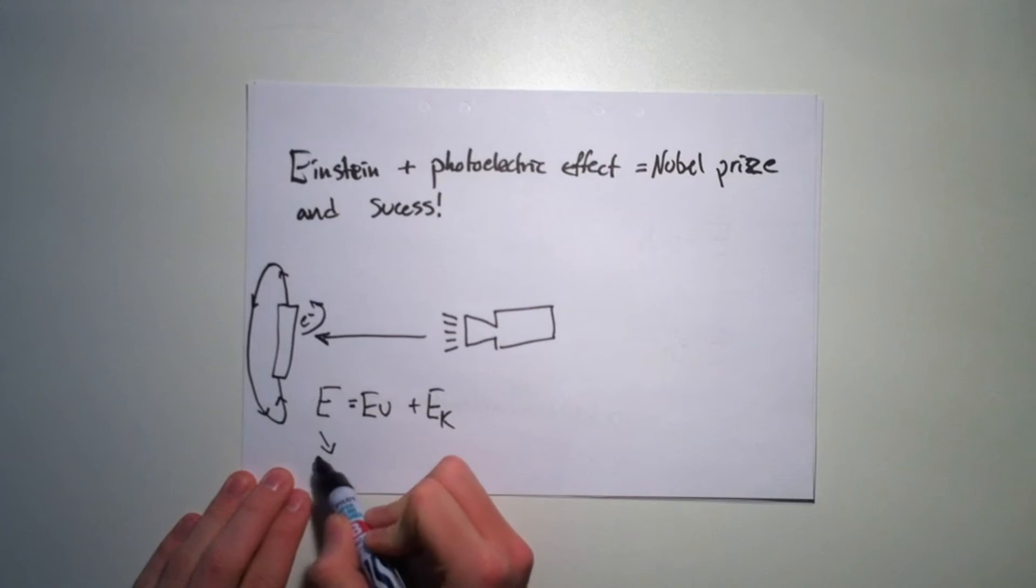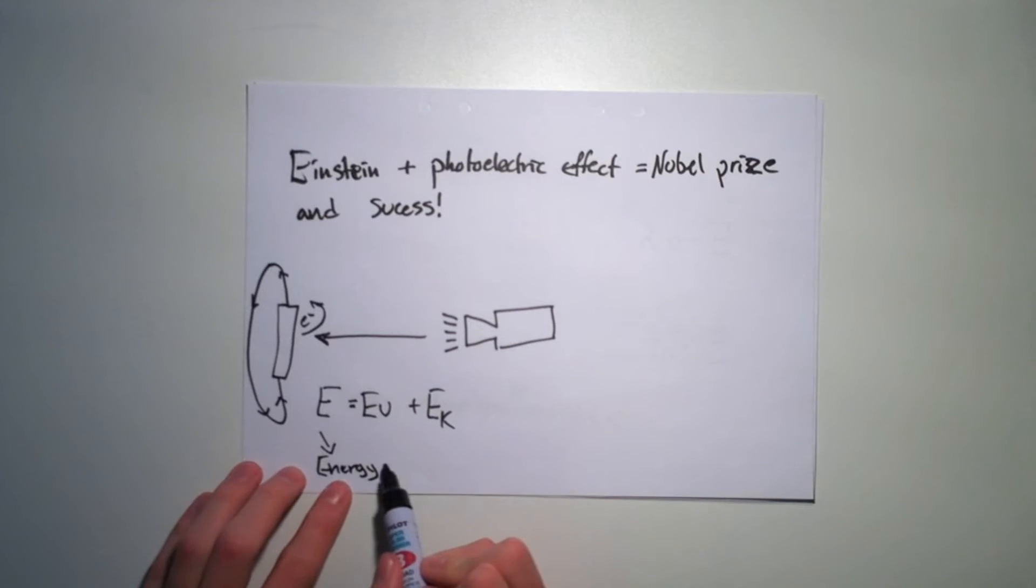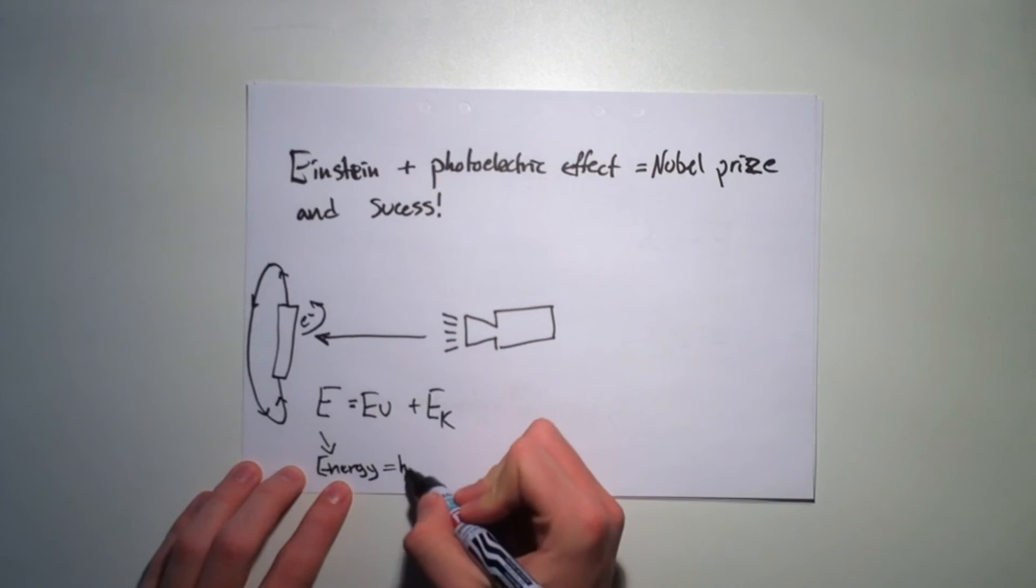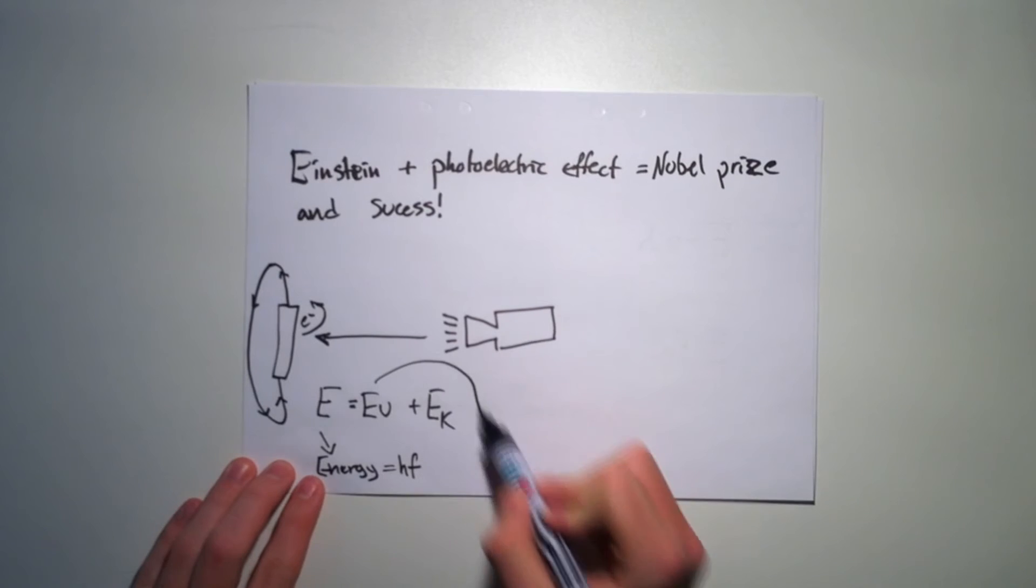E stands for energy, and since the energy can be described by Max Planck's energy pack equation, E equals HF, the equation is equal to HF.